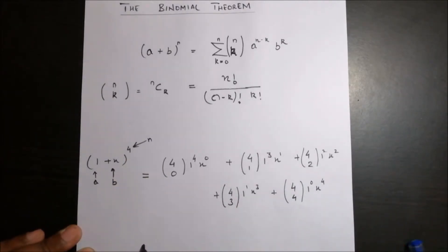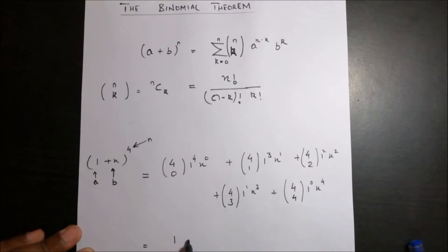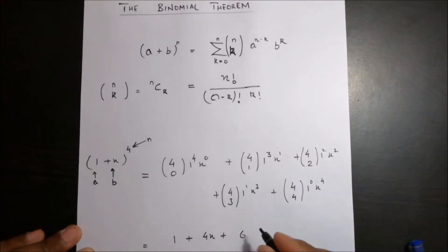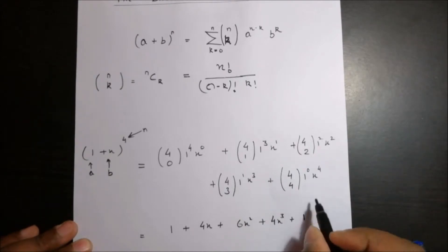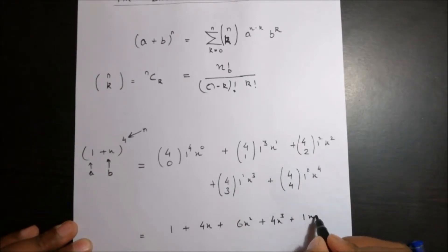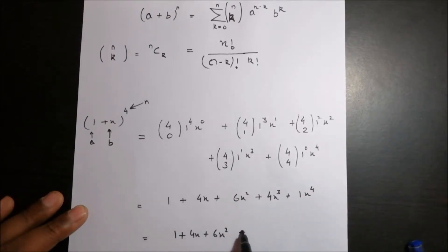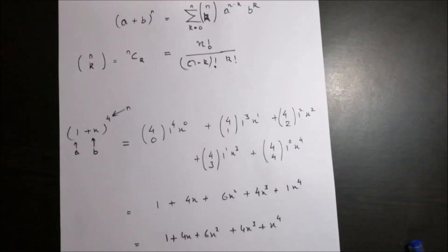We can simplify it: 4-choose-0 is 1, 1^4 is 1, x^0 is 1. 4-choose-1 is 4, times x. 4-choose-2 is 6, times x squared. 4-choose-3 is 4, times x^3. 4-choose-4 is 1, 1^0 is 1, times x^4. So it's 1 + 4x + 6x² + 4x³ + x⁴. This is the binomial theorem expansion.